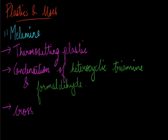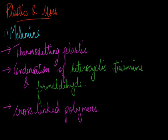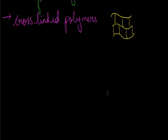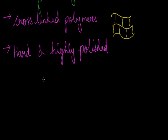Melamine is a cross-linked product. Cross-linked means linking between the layers. When layers are interconnected they form a strong polymer, called a cross-linked polymer. The next property of melamine is that it is hard and highly polished, meaning it is smooth and has a good shine. It is used for purposes where we require good finishing and the material should be hard.